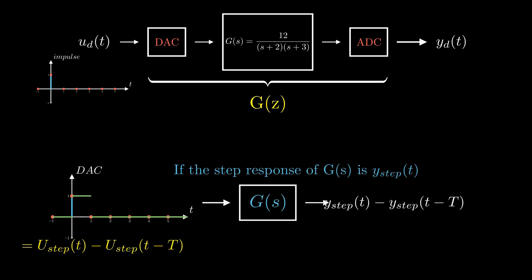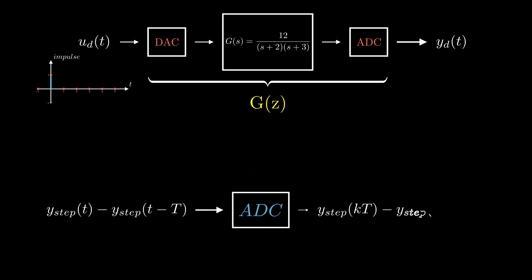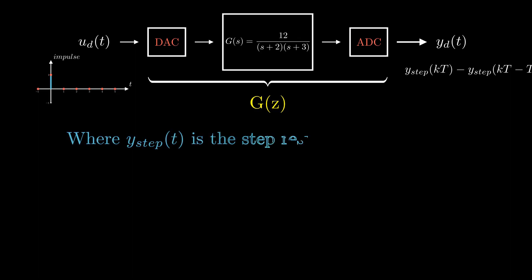When this signal is fed into analog to digital converter, the ADC will sample the signal at regular intervals and give a discrete output as y_step(t) minus y_step(t minus T). This is the output of our system, where y_step(t) is the step response of our analog system G(s).